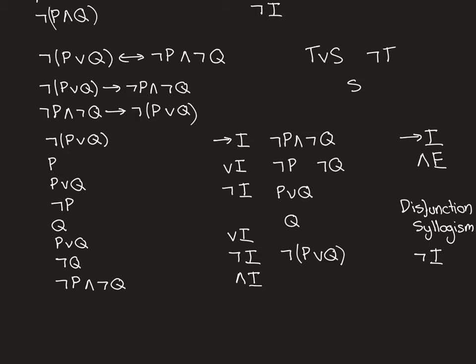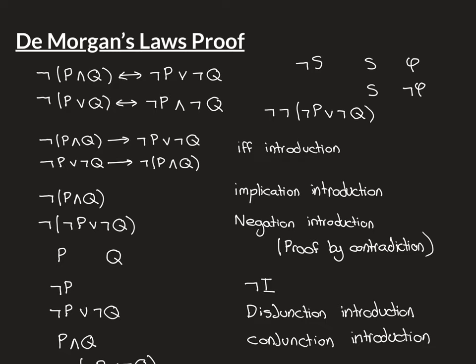Therefore by negation introduction we have 'not (P or Q)'. So what we've shown is that from 'not P and not Q' you can derive 'not (P or Q)'. By implication introduction, we finally have this second direction. Overall, we've clearly shown both directions, and by biconditional introduction we have the second DeMorgan's law. So overall, what we have shown is that these two laws of logic — the two DeMorgan's laws — don't need to be axiomatised themselves in classical logic. They can be derived from the other rules of inference that are allowed in classical logic.